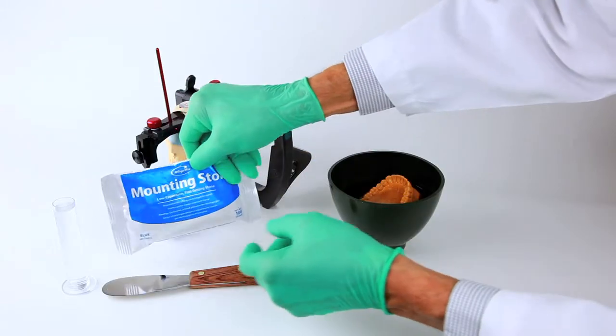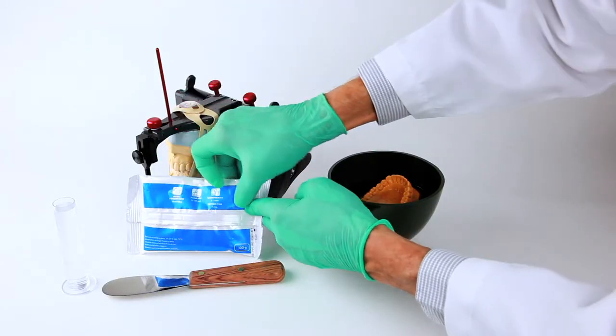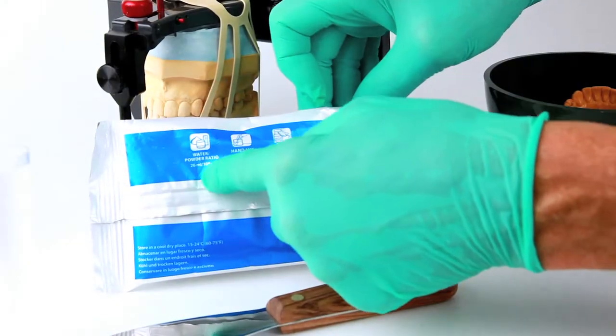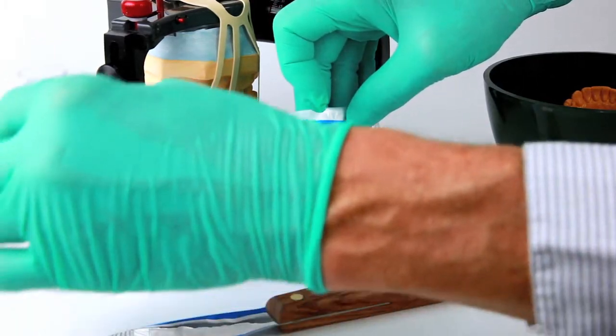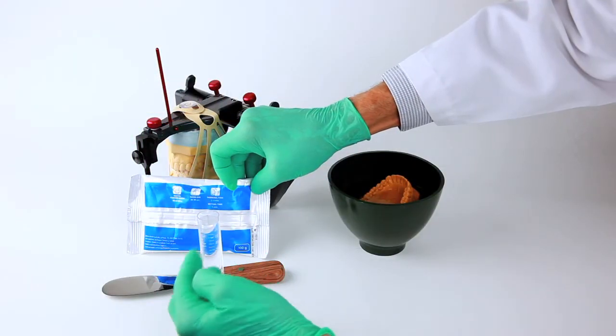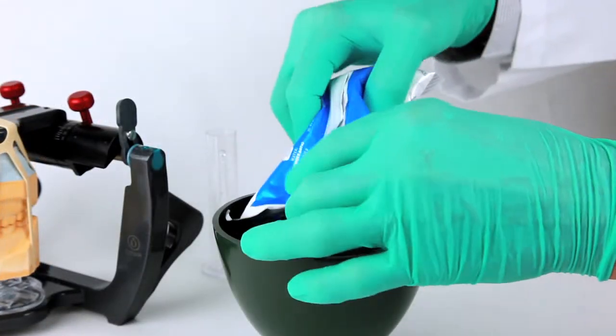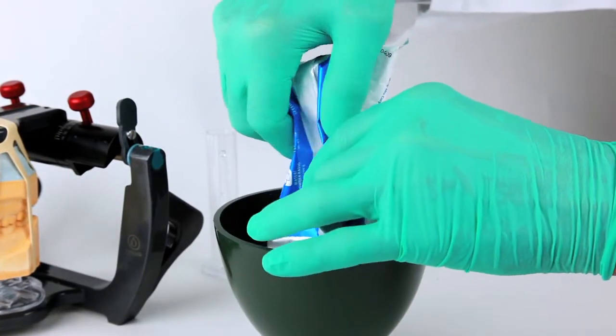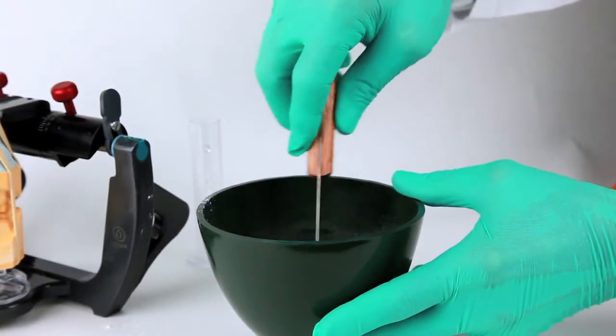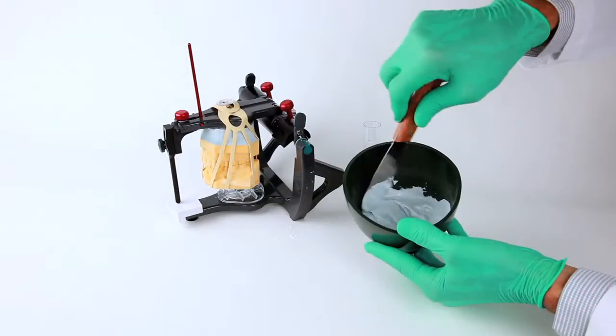At this time, we are now ready to mix the mounting stone or plaster, paying attention to the proper water-powder proportions so that an ideal consistency and setting expansion can be obtained. This is accomplished by placing the water in the mixing bowl first and then adding the powder to it, mixing to a smooth, creamy consistency.